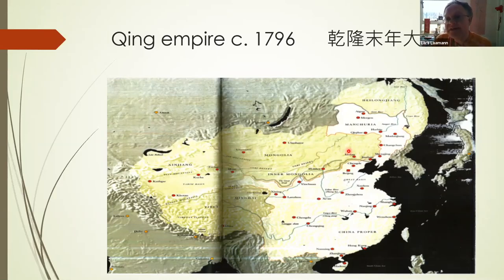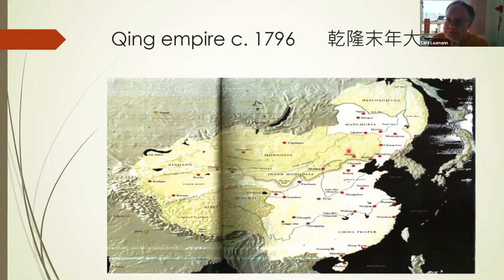Nurhachi, in the quest to create a language for his new Manchu people, borrows directly from the Mongols, because he knows that all Manchus know how to read Mongolian. Very important.